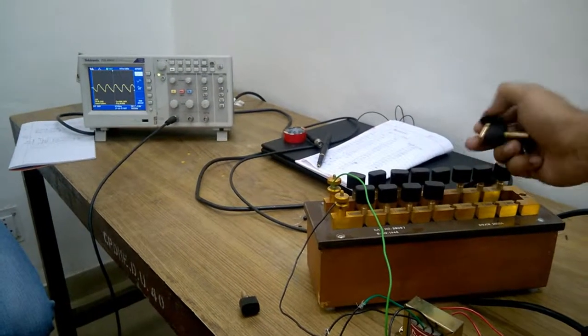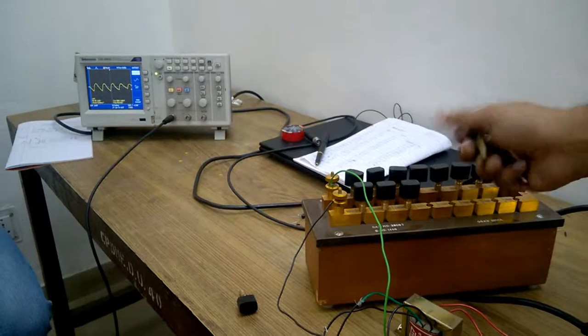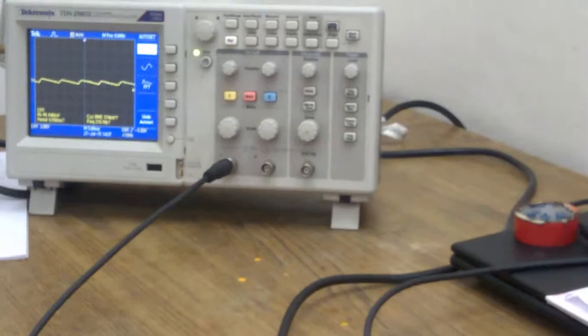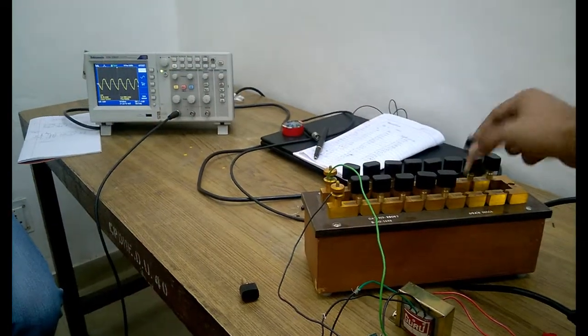As you can see, I'm increasing the resistance by taking out more pins from the resistance box, and the ripple factor is becoming lower and lower. Thanks for watching, I hope you enjoyed the video.